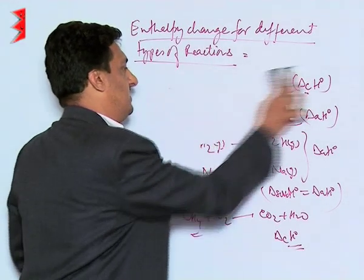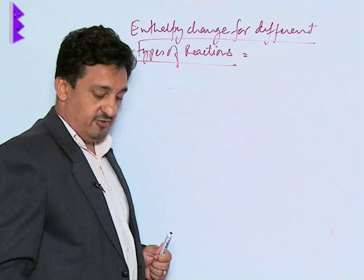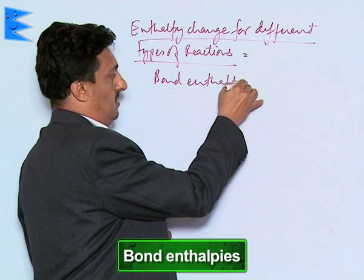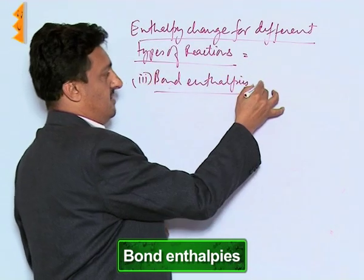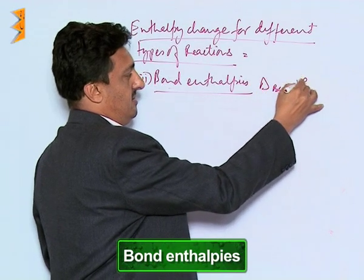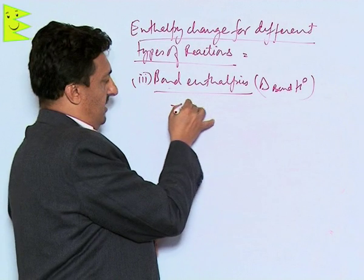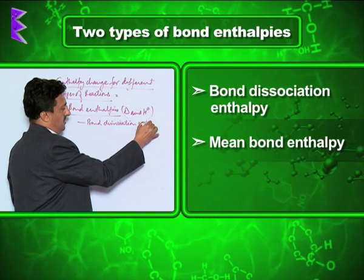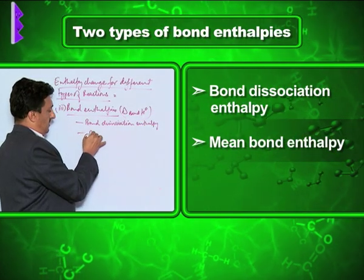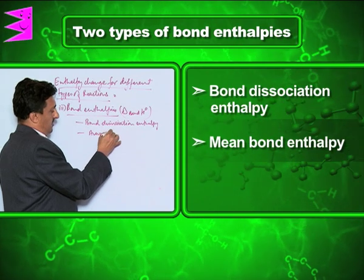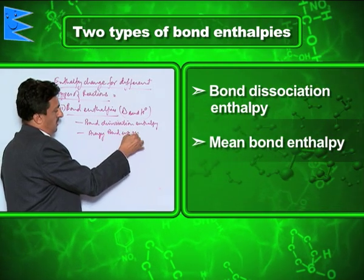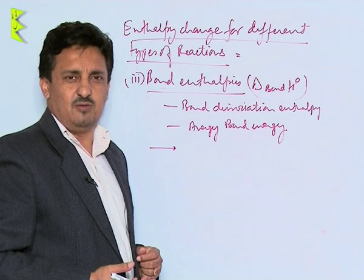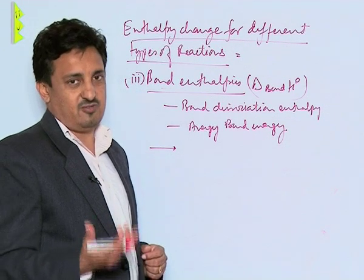The third in the list is bond enthalpies, which are mainly of two types: bond dissociation enthalpy and average bond energy. We define bond enthalpy as the amount of energy required to break one mole of bonds.